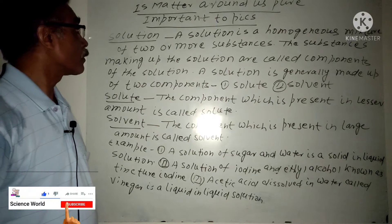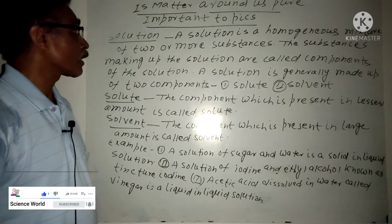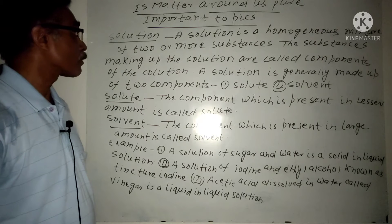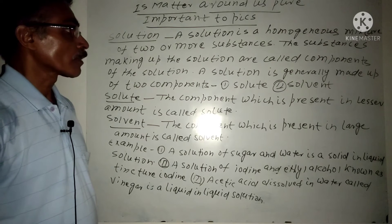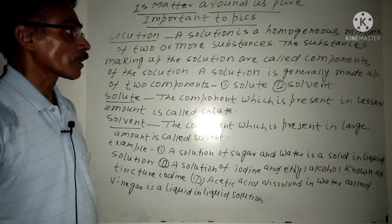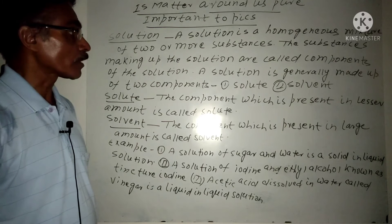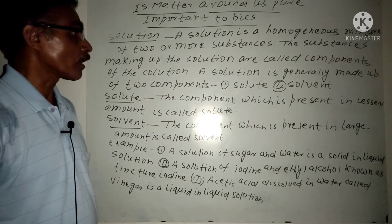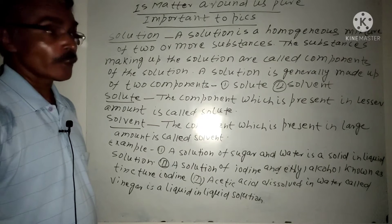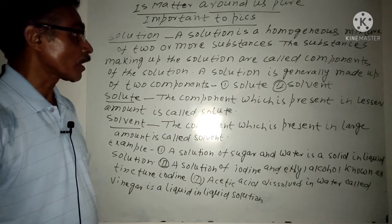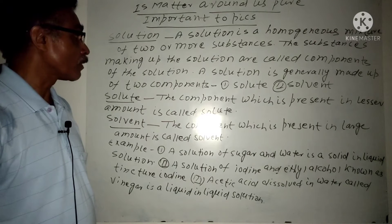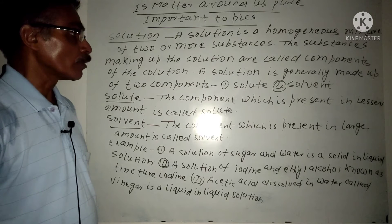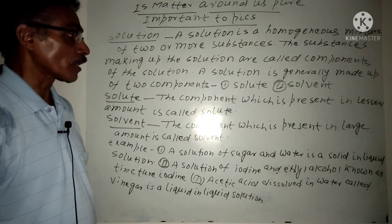I'm going to talk to you about the solution. The solution is a homogeneous mixture of two or more substances. The substances making up the solution are the core components of the solution. The solution is generally made of two components.